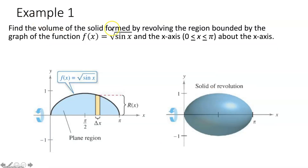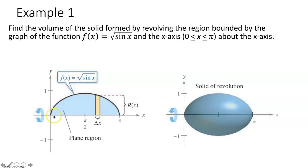Example one: find the volume of the solid formed by revolving the region bounded by f(x) = √(sin x) and the x-axis on the interval from zero to pi about the x-axis. We're taking this region, revolving it about the x-axis to get a solid of revolution with circular cross sections, because our region is connected to our axis of revolution. So we'll use the disk method and integrate the area formula for a circle, pi r squared.